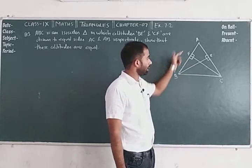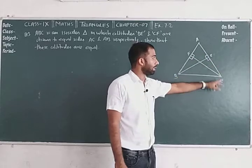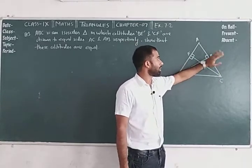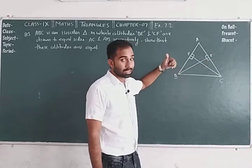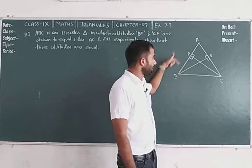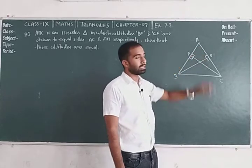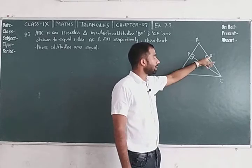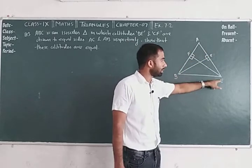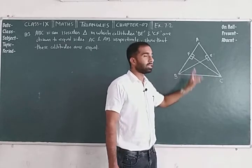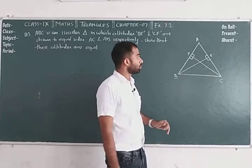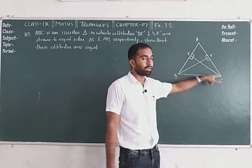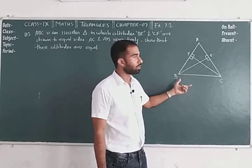If we consider triangle ABE and triangle ACF, in triangle ABE we have AB given, angle E given, and angle A given. In both triangles we get BE and CF. The values to consider here are: AB is equal to AC — given, because this triangle is isosceles.